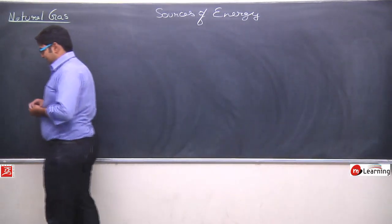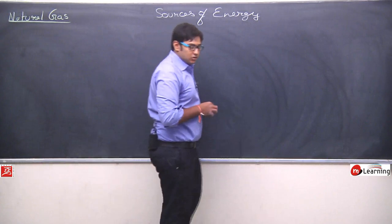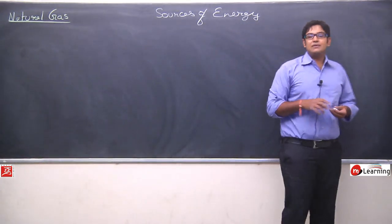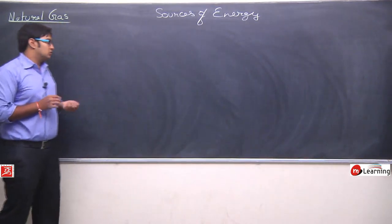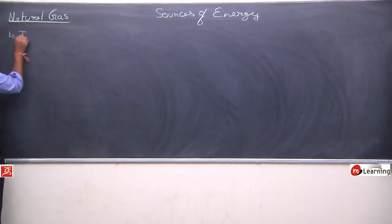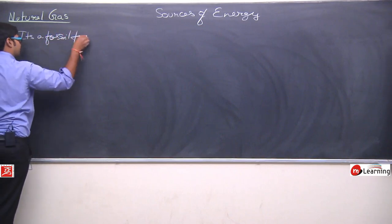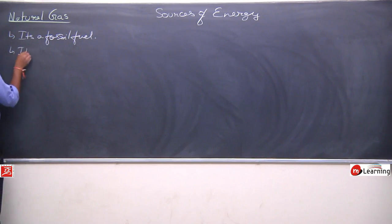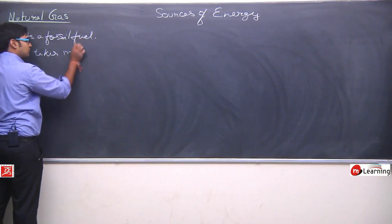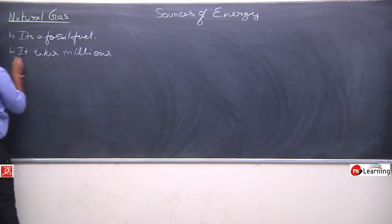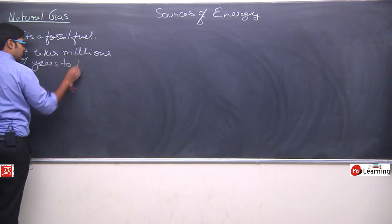Natural gas, we have seen that coal and oil are fossil fuels because they take millions of years to form, and in the same way natural gas is also a fossil fuel and it takes millions of years to form. So, natural gas is a fossil fuel, it takes millions of years to form.